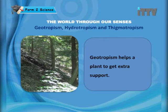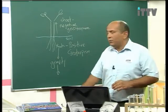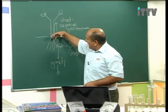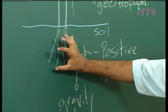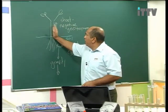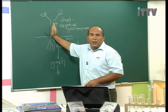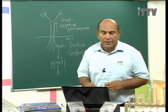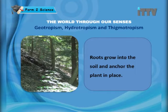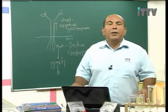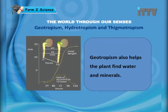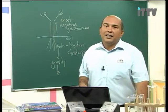Geotropism helps a plant get extra support. As the roots grow downwards into the ground, they anchor the plant into the ground, giving it more stability. By growing downwards, the roots give the plant an extra amount of support. Geotropism also helps the plant find water and minerals, because most of the time water and minerals are inside the soil.